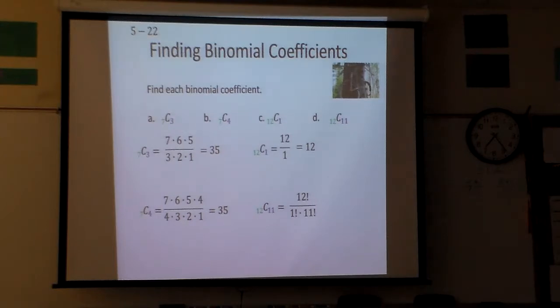A 12 factorial and a 1 times 11 factorial. When I have that many, it's a lot of numbers to write down. So the 11 will cancel out and I still end up with 12 as the answer.